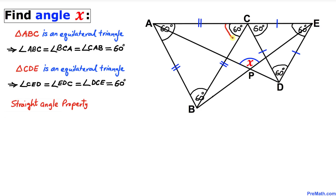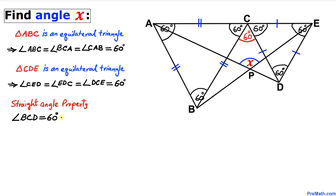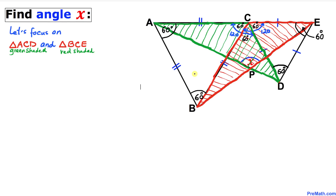Now we are going to apply the straight angle property. We know that the whole angle is 180 degrees. Since this angle is 60 degrees and this angle is 60 degrees, this remaining angle is also 60 degrees. Therefore angle BCD turns out to be 60 degrees.